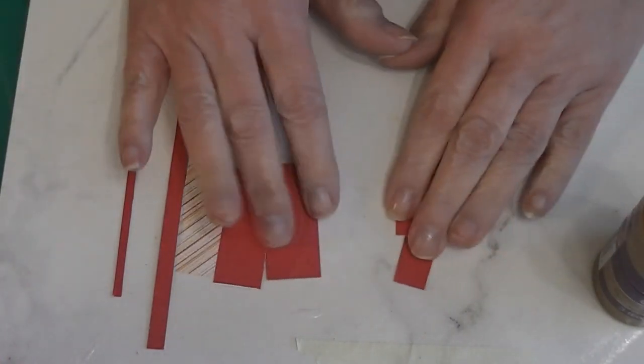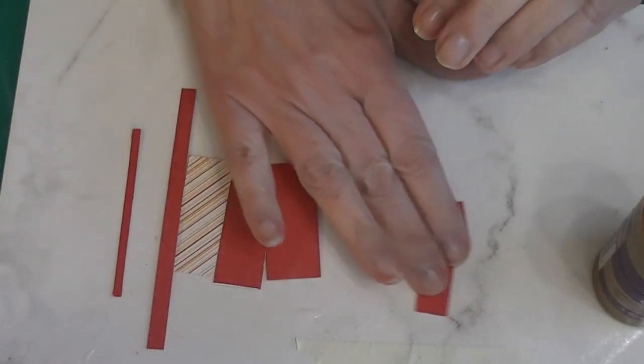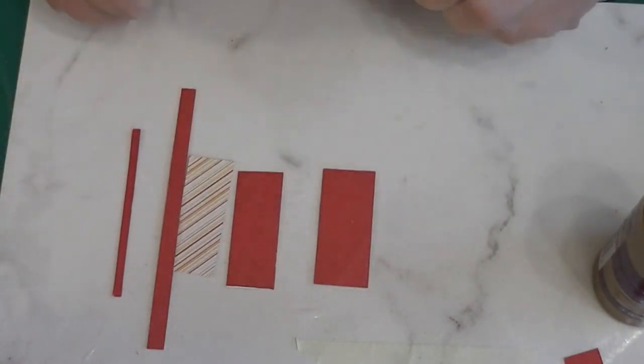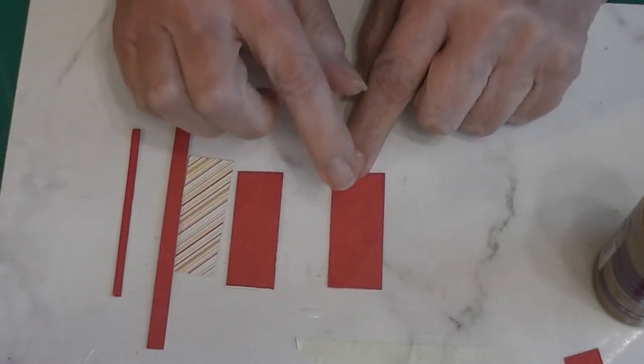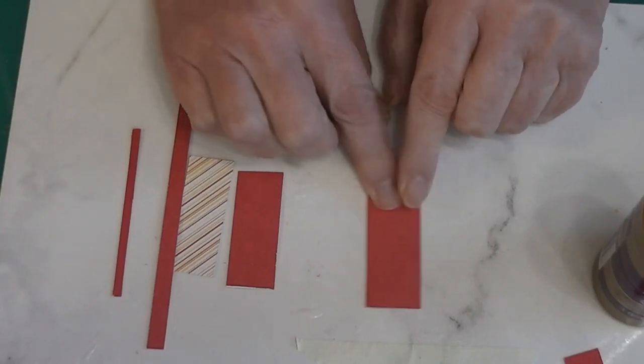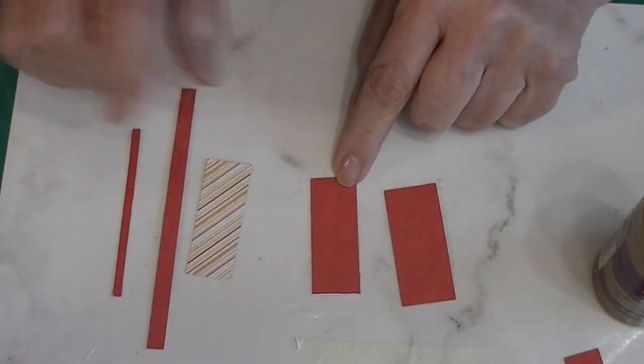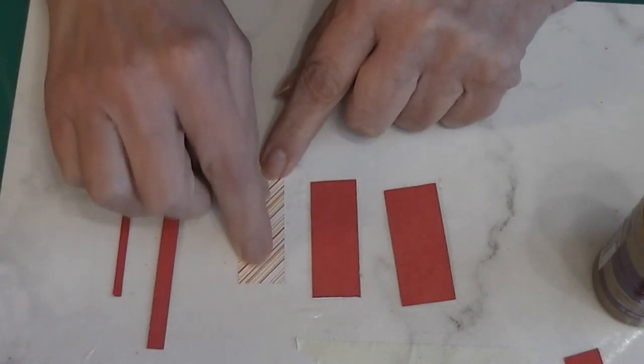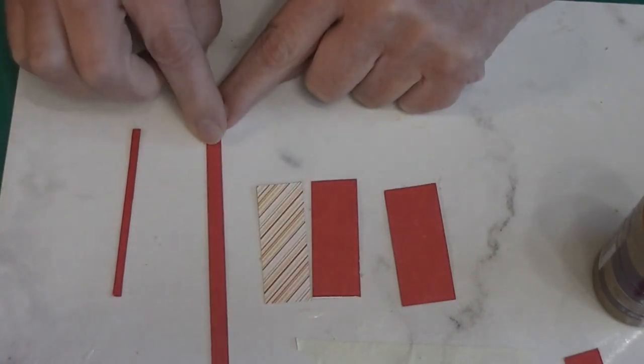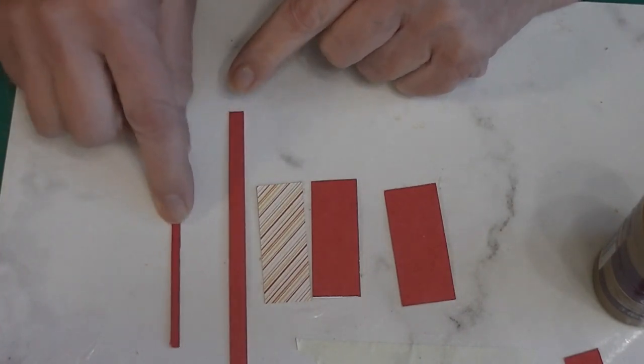So I've cut the following sizes. First off, we have two small scrap pieces that will go off to the side for later. I have a piece that is seven-eighths of an inch by two inches, a piece that's three-fourths of an inch by two inches, and the design piece is three-fourths of an inch by two inches.